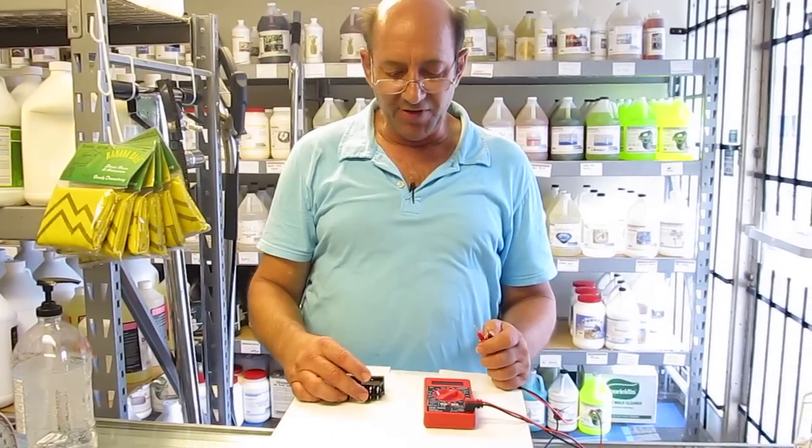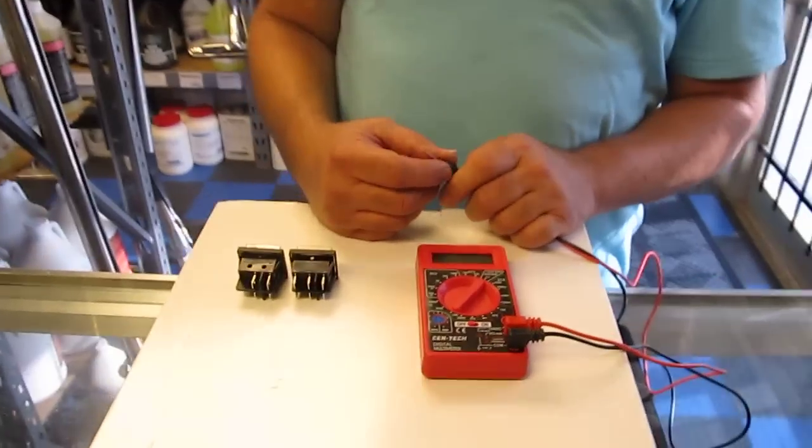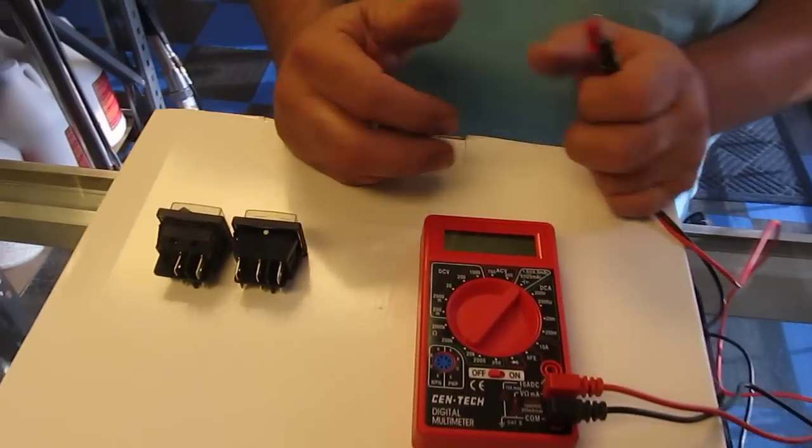We're going to show a couple of the functions of this Syntec digital multimeter. It's a volt ohm DC amp meter.